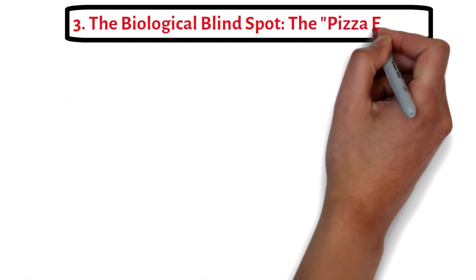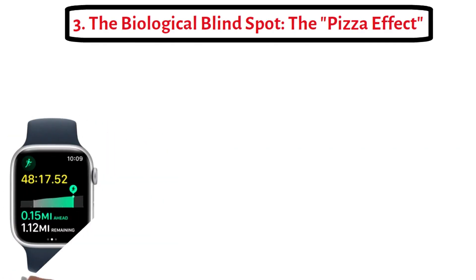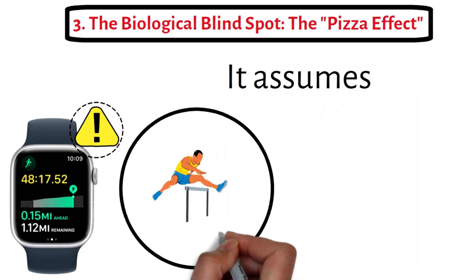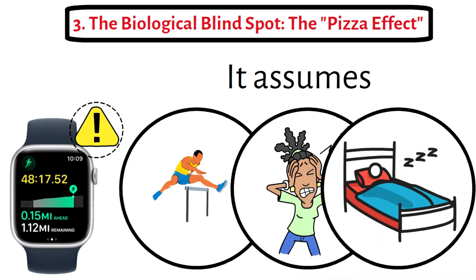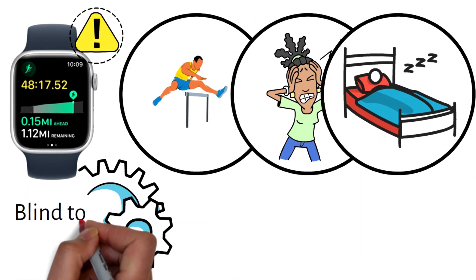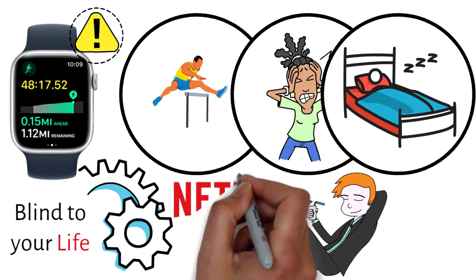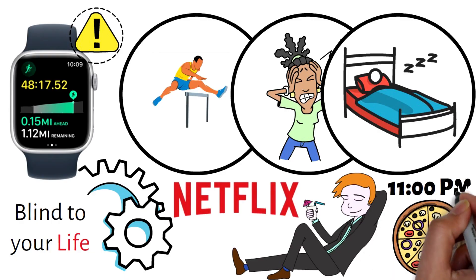Three, the biological blind spot: the pizza effect. Your watch sees that your HRV crashed last night. It assumes, 'Oh, he trained too hard yesterday, he hasn't recovered, tell him to rest.' But the algorithm is blind to your life. It doesn't know that you didn't train hard. It doesn't know that you watched Netflix until midnight and ate a massive pepperoni pizza at 11 p.m.